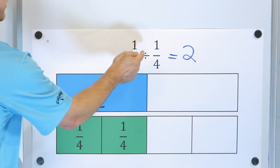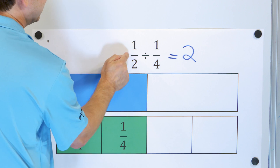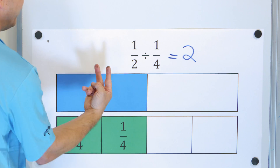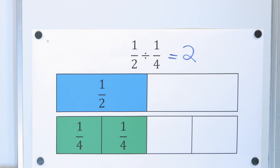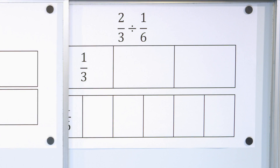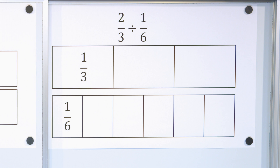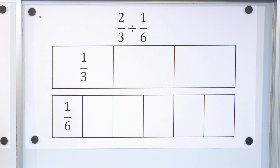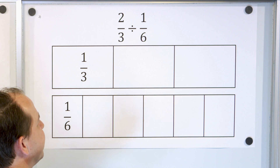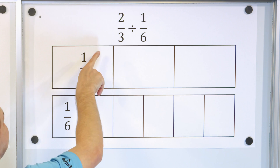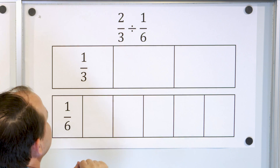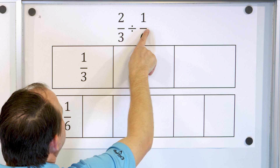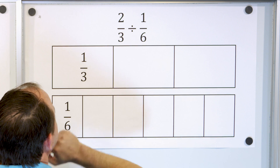So we say the fraction 1 half divided by 1 fourth is exactly equal to 2, because 1 fourth fits into 1 half two whole times. That is basically the concept of fraction division — it's the same thing as regular division, just applied to fractions. Let's take another example: 2 thirds divided by 1 sixth. We want to see how many times 1 sixth can fit inside of 2 thirds.